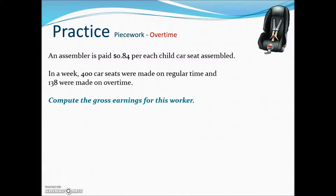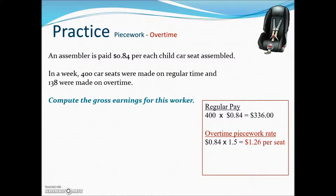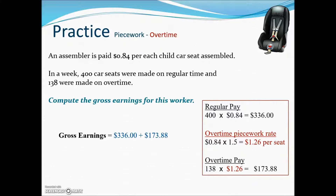An assembler is paid $0.84 per each child car seat assembled. In a week, 400 car seats were made on regular time and 138 were made on overtime. Regular pay is $0.84 times 400, giving straight pay of $336. For overtime, the rate is $0.84 times 1.5, which equals $1.26 per seat. Overtime pay is $1.26 times 138 seats. Adding regular and overtime pay gives the gross earnings for this worker.